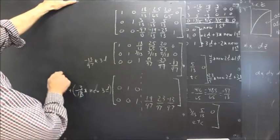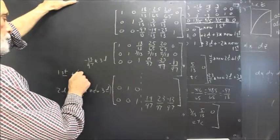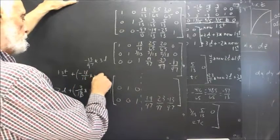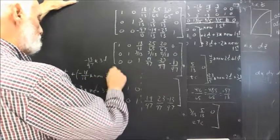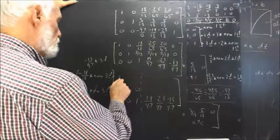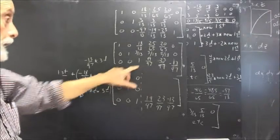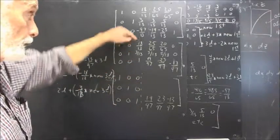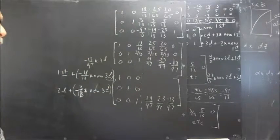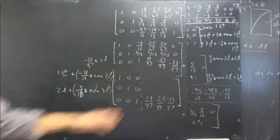And then, we're going to do the first plus negative 18 thirteenths times our new third row. And that's going to give us our first row. And it's going to give us 1, 0, 0 to start with. That's, of course, our goal because negative 18 thirteenths of 1 is negative 18 thirteenths, which added to 18 thirteenths gives us 0. So, we have the identity matrix here. Now, we've still got to figure out what goes in the rest of the inverse matrix over here.